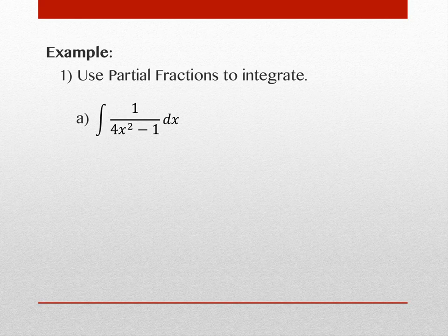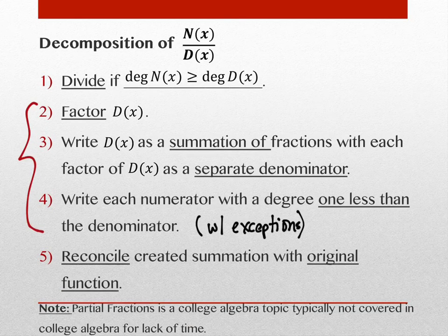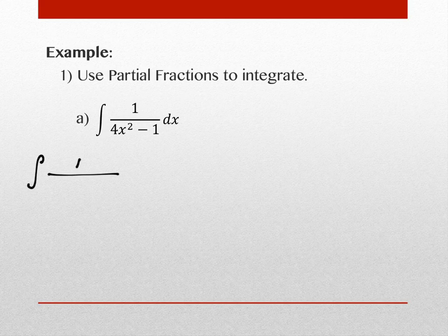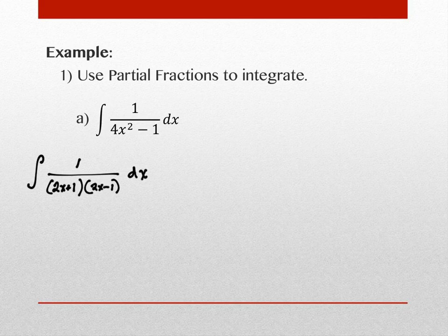The way this works: first we look at the degree of the numerator — it's not bigger than the degree of the denominator, so we're on step two. We look at the denominator and factor it. So if I were to factor this denominator — 4x² − 1 — what does it factor into? It factors into (2x + 1)(2x − 1). That's step two: factor the denominator.